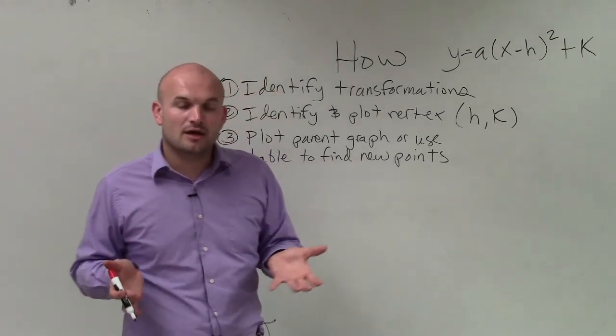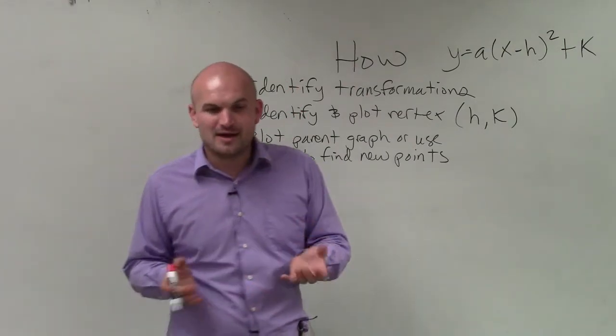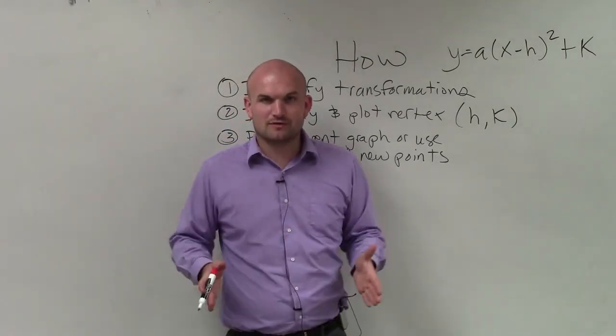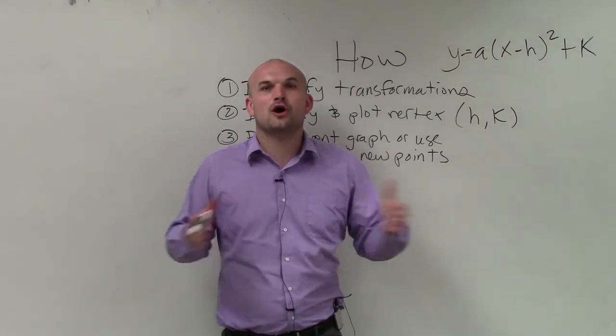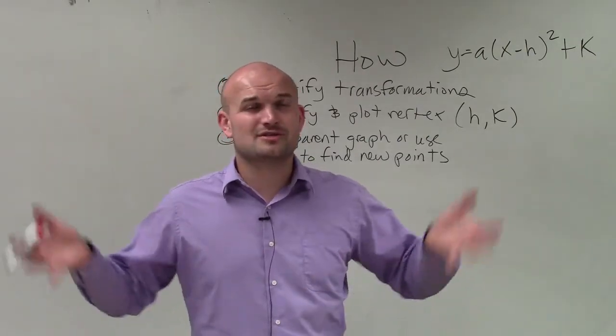I don't want to go over it, I have a video for the parent graph, but basically you go over one up one, over two up four, over three up nine. Just look at the table of values for the parent graph and you can go ahead and plot those points.